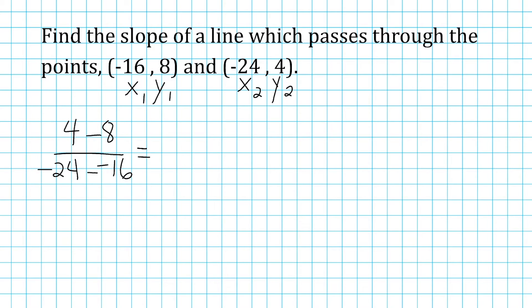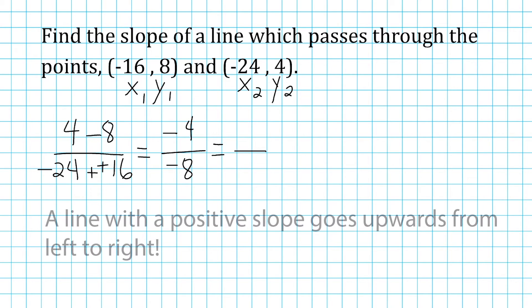So for the numerator or change in y values, we have 4 take away 8, which is negative 4. And for the denominator, we have negative 24 plus 16, which is negative 8. Now, when both of your values are negative, we have to remember that it turns into a positive. So the slope of this line is going to be positive 1 half.